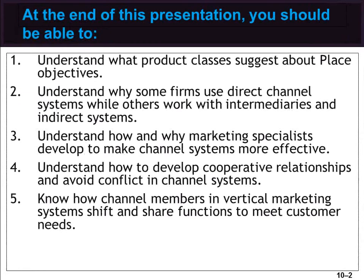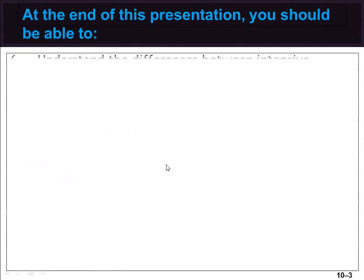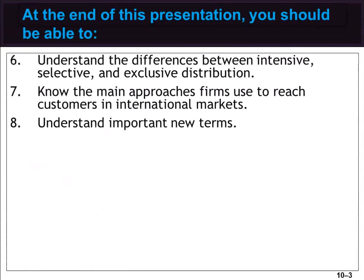During this lecture you will understand what product classes suggest about place objectives, understand why some firms use direct channel systems while others work with intermediaries and indirect systems, understand how and why marketing specialists develop to make channel systems more effective, understand how to develop cooperative relationships and avoid conflict in channel systems, know how channel members in vertical marketing systems shift and share functions to meet customer needs, understand the differences between intensive, selective, and exclusive distribution, know the main approaches firms use to reach customers in international markets, and a whole bunch of new terms.